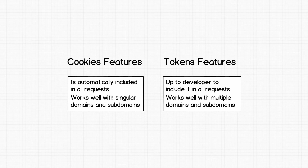Cookies have a specialized handling mechanism: as soon as the browser receives a cookie for a particular domain, it always sends that cookie back to the server on every request. That can be good because it requires no extra work, but also bad because cookies are sent even when they aren't needed. Cookies also work really well with a single domain and its subdomains — for example, food.com — but it gets messy when trying to share cookies across entirely different domains like bar.com.